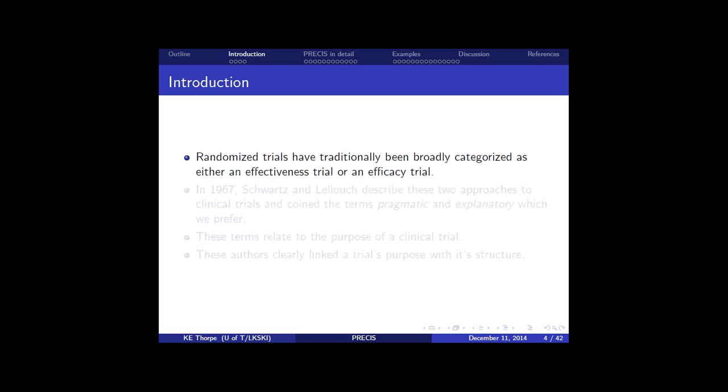All right. So randomized trials in the past have been considered or called either effectiveness or efficacy. Terms I don't particularly like, they don't convey, they sound so similar and it's always difficult, I find, to keep sorted out in one's mind which is which. Long time ago now, back in 1967, Schwartz and Lelouch described two approaches to trial design. And they, at that time, coined the terms pragmatic and explanatory. I prefer those. They're considerably more transparent, I think, in terms of what they're achieving.